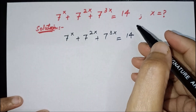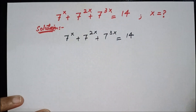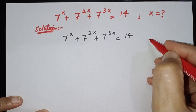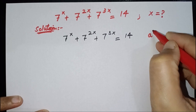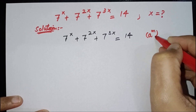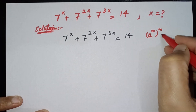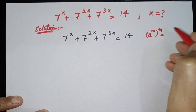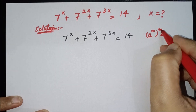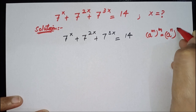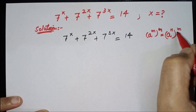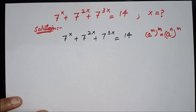In the first step I will use an identity of exponents. If we are given a to the power m, and a to the power m to the power n, then we can interchange the powers — n can be written inside the parentheses and m can be written outside. I am going to use this property here.